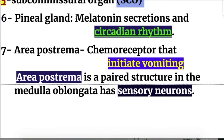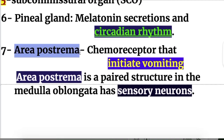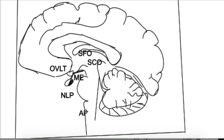The pineal gland secretes melatonin and has a circadian rhythm — the body's time clock. And number seven is the area postrema. The area postrema is located here in the medulla; it's a paired structure with sensory neurons that initiates vomiting.